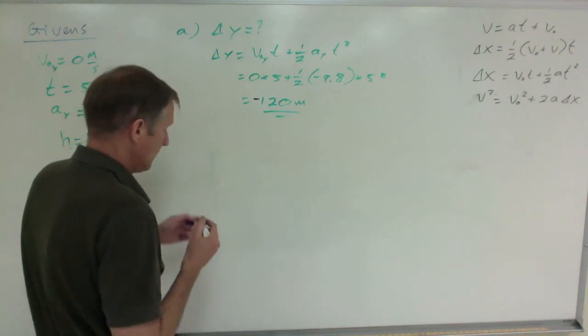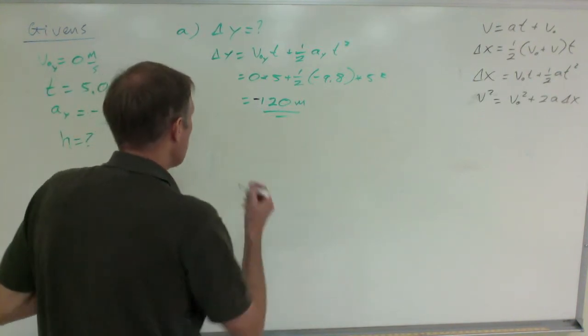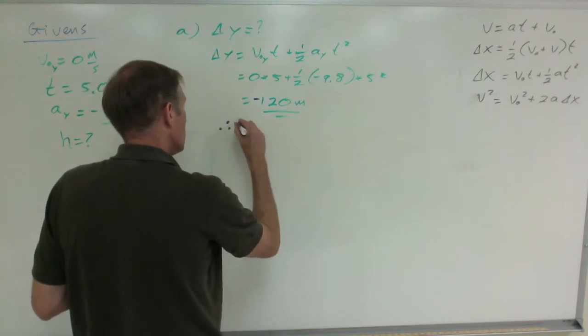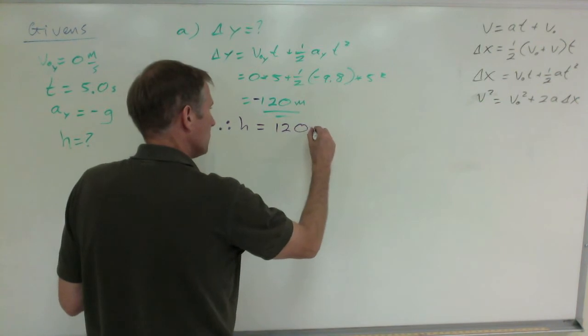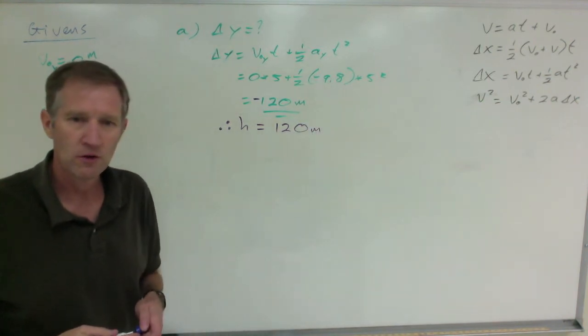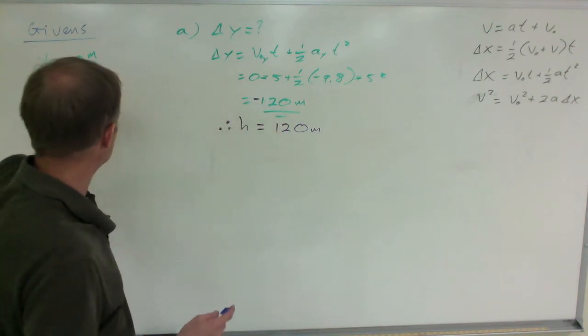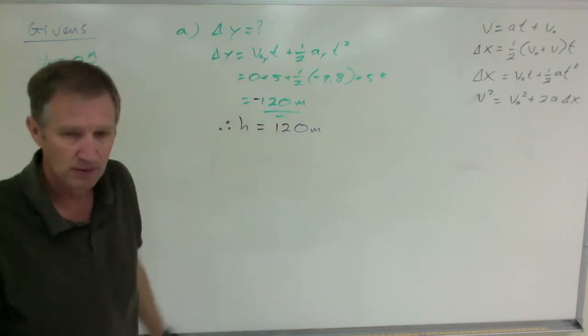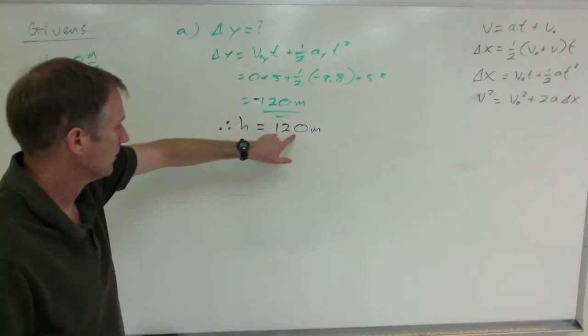That's negative. It falls 120 meters. Therefore, we can conclude that the height of the platform that it was released from must have been 120 meters up. The thing is dropped, it falls 120 meters in five seconds, so it must have been released from a height of 120 meters. That is the conclusion.